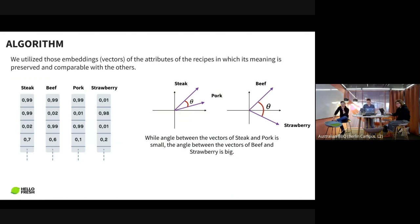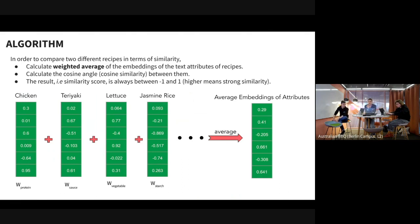We thought we could utilize this information to compare our recipes, because we have most of the features available in our data warehouse. Our algorithm basically calculates recipe ingredient embeddings for each of the attributes — as you can see: protein, primary protein, primary source, vegetable, dish type, and this list goes on. We then assign weights to each attribute.